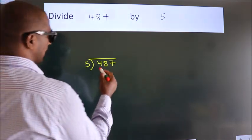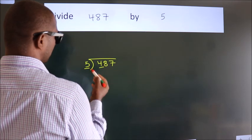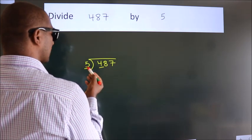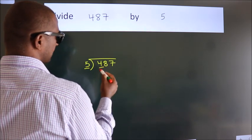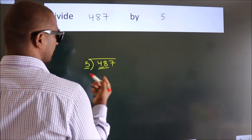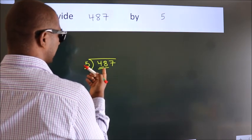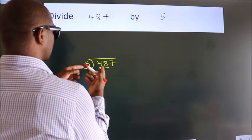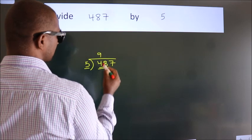Here we have 4, here 5. 4 is smaller than 5, so we should take two numbers: 48. A number close to 48 in the 5 table is 5 nines, 45.